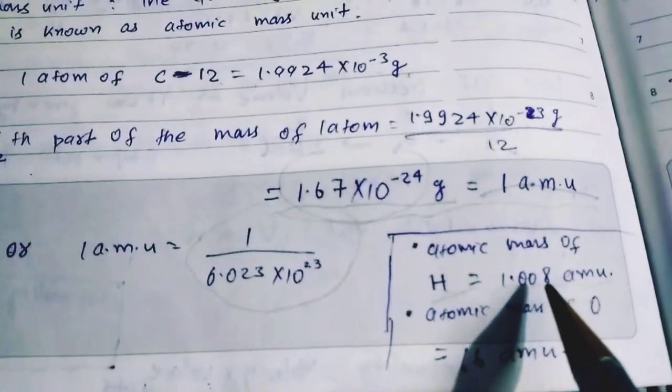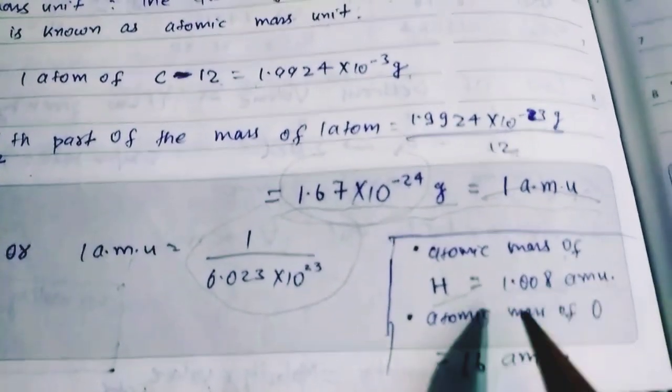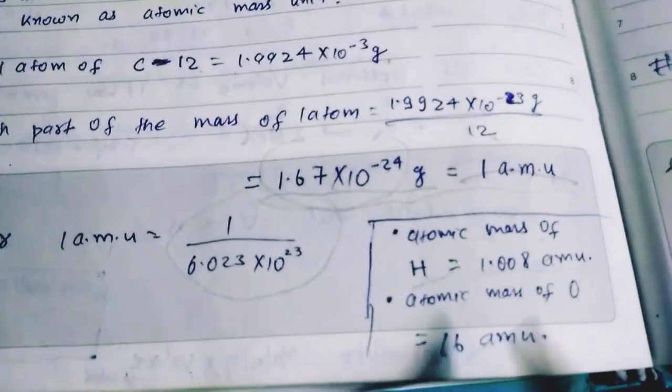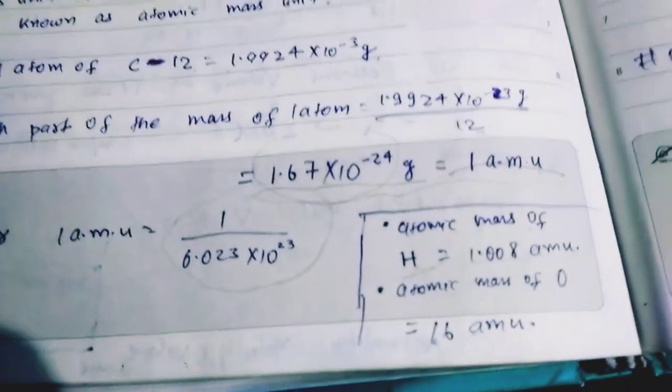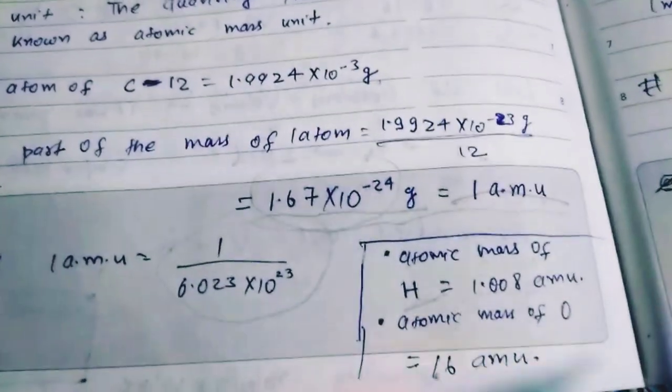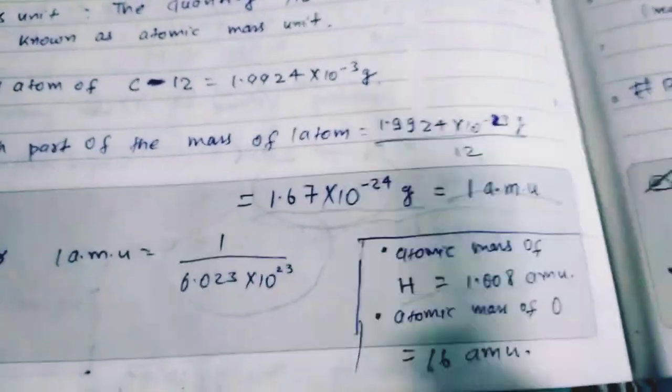Atomic mass of hydrogen is 1.008 amu. Atomic mass of oxygen is 16 amu. अभी हम लोग atomic mass की बात कर रहे हैं, ठीक है — molecular mass बाद में आएगा।